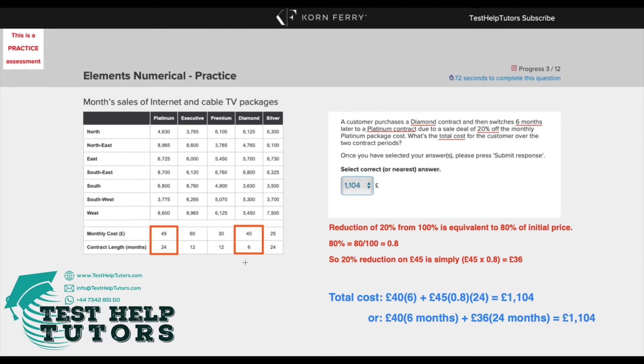So what we'd have to do is work out how much a diamond contract costs our customer for six months and then how much the platinum contract costs our customer for 24 months and then add it together to get us the total cost. Because that's what they're asking for in the question, the total cost over the two contract periods.